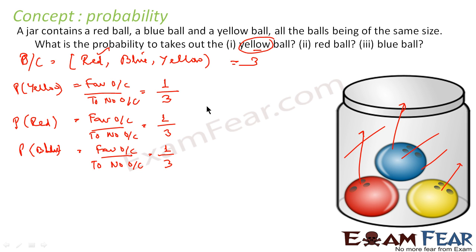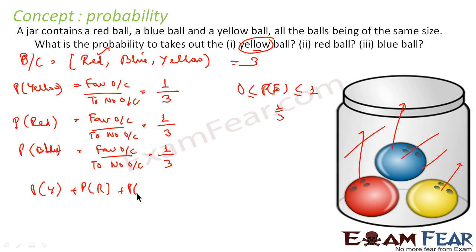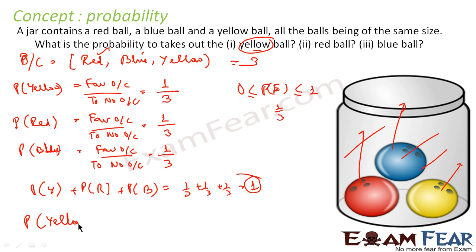So we have one by three for each. Observing the axioms: P(E) is always greater than or equal to zero and less than or equal to one — one by three satisfies this. Also, the sum of all probabilities: probability of yellow plus probability of red plus probability of blue equals one by three plus one by three plus one by three, which equals one. We can also find probability of not yellow: one minus one by three equals two by three.